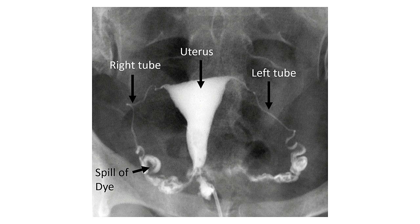In the female, the peritoneum is an open cavity and it communicates externally with the fallopian tubes. The path goes through the fallopian tubes to the uterus, then to the vagina, and is open outside — it is an open cavity. So you can know that the tubes are open.